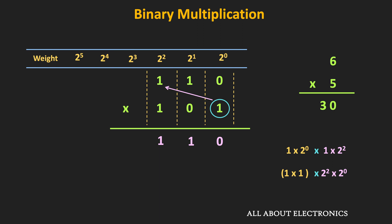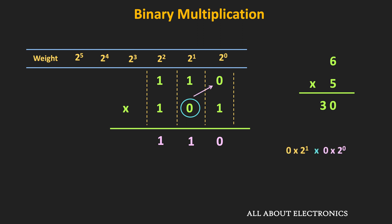Similarly, now let us multiply the second digit of the multiplier with each digit of the multiplicand. First, let us multiply it with the 0. So 0×0 = 0. But the weight of this 0 is equal to 2 to the power 1, while the weight of the other 0 is equal to 2 to the power 0. That means if we multiply their weights, their product will be equal to 2 to the power 1. Therefore, we will place this 0 in the 2^1 column. And for convenience, let us place an X there.